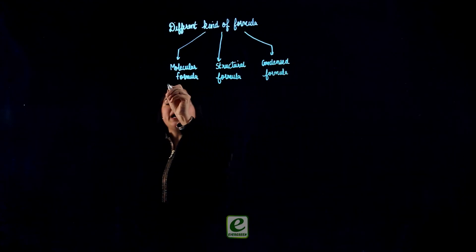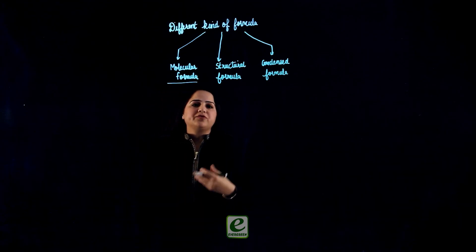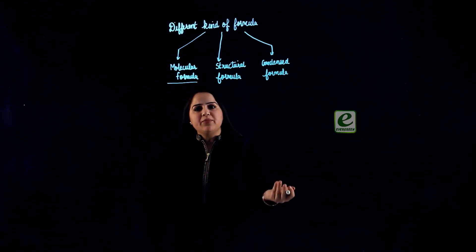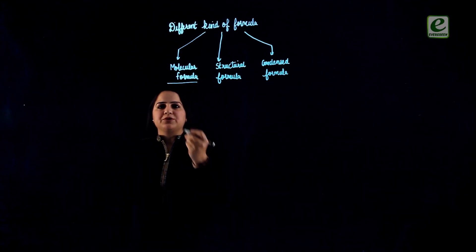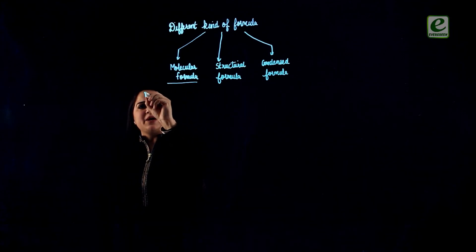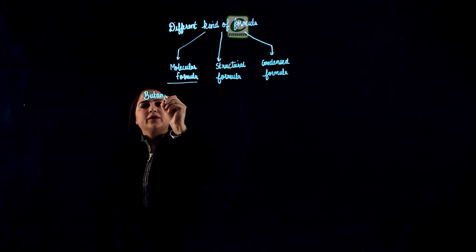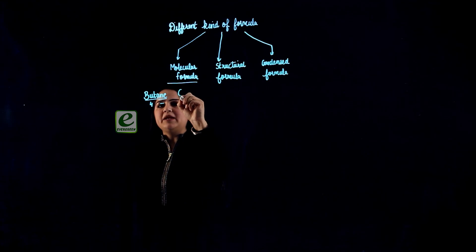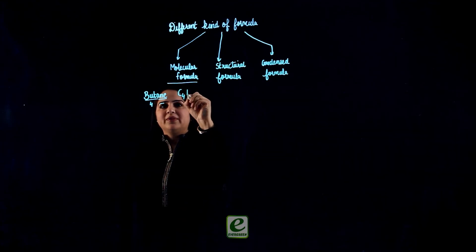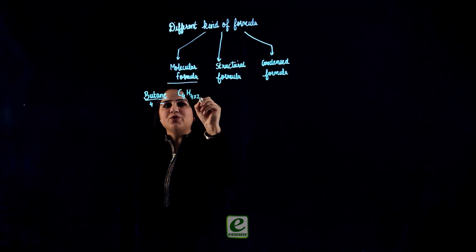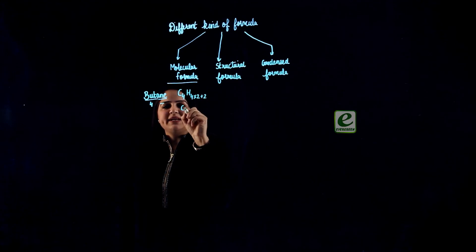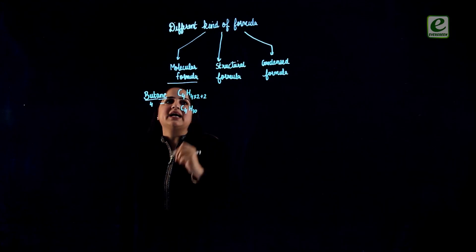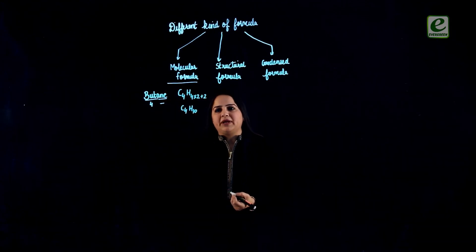Molecular formula just gives us an indication of the number of carbon and hydrogen atoms present in the compound. For example, if I say butane — 'but' means 4, 'ane' means single bond, that means it has been derived from alkane. So the formula will be C4H(2×4+2), that means we will have C4H10 as the molecular formula.